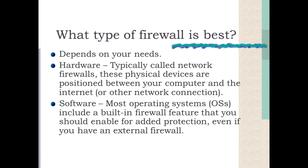Software firewalls: most operating systems (OSs) include a built-in firewall feature that you should enable for added protection, even if you have an external firewall. Firewall software is also available separately from your local computer store, software vendor, or ISP. If you download firewall software from the internet, make sure it is from a reputable source — an established software vendor or service provider — and offered via a secure site.